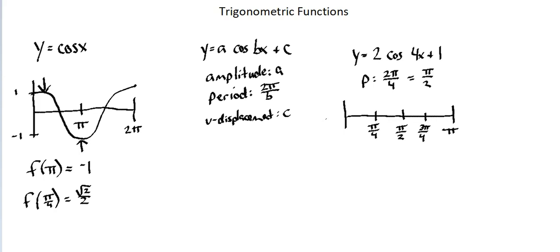The vertical displacement is 1, so I'm going to mark my centered line as 1. I have amplitude of 2, so my range is going to be from negative 1 to 3. I'll also mark the x-axis on the graph.